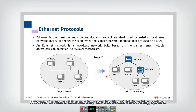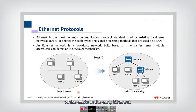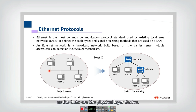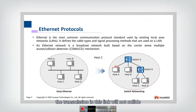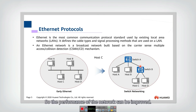However, in recent Ethernet they use a switch networking system. This architecture solves the problems which existed in early Ethernet. They use switches as the key devices to replace hubs. As hubs are physical layer devices, the switch actually is a link layer device. Switches can separate the traffic in different links, and by using the switch, the transmission on one link will not collide with other links. So the performance of the network can be improved.